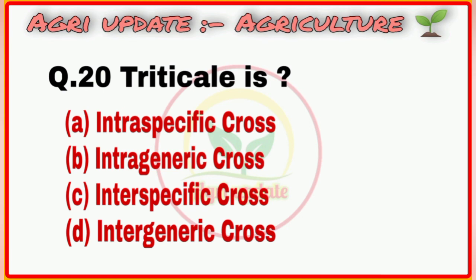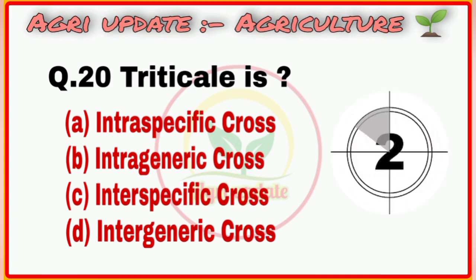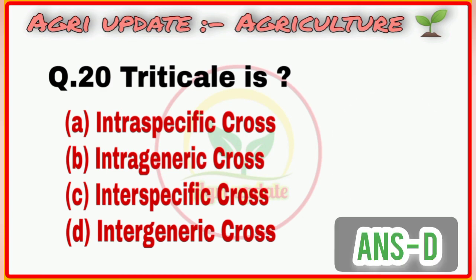Question number 20: Triticale is. First option is intraspecific cross, second option is intraspecific cross, third option is intraspecific cross, fourth option is interspecific cross. The right answer is option number D, interspecific cross.